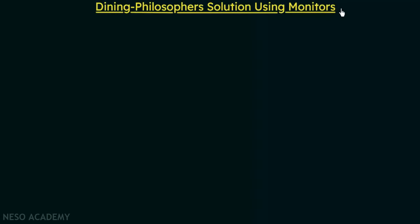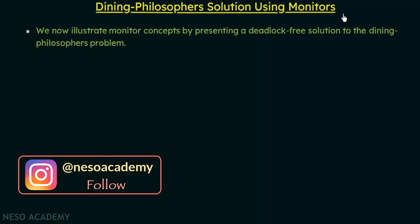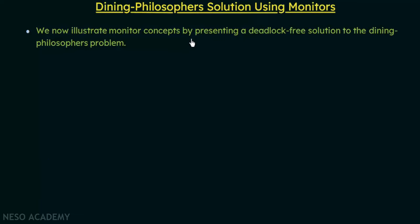In the previous lecture we discussed monitors and saw an introduction to how they work. In this lecture we will discuss the dining philosopher's solution using monitors. We already discussed the dining philosopher's problem with semaphores, but that solution could lead to deadlocks. So here we will see how monitors provide a deadlock-free solution to the problem.